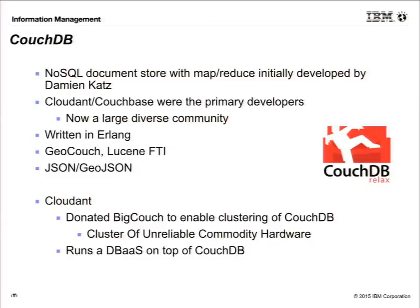CouchDB is a NoSQL JSON document store. It was originally developed by Damien Katz when he was working for IBM about six or seven years ago. He left and formed his own company called Couchbase. The company I work for, Cloudant, started shortly after Couchbase, and they were more of a scientific company. We came from the Large Hadron Collider, but we're now a very large and diverse community all across the world. It's written in Erlang, which is a very obscure language that many people who know telecoms tend to use, but it's highly fault tolerant and gives you high availability.